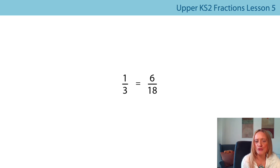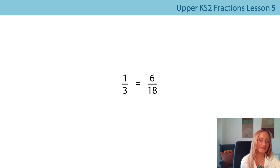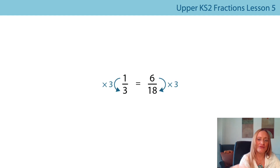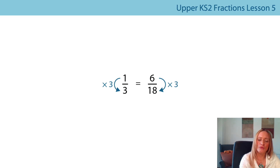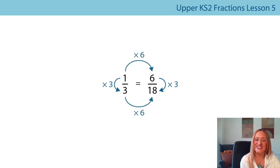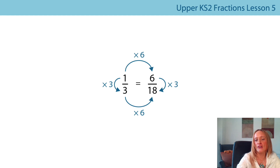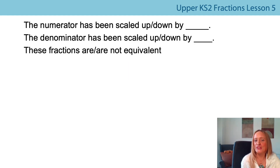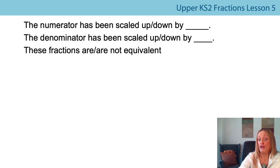Have a look at this one — you might want to pause and write it down. Is the scale factor the same vertically for both of these equivalent fractions? And is it the same horizontally? Can you see a relationship horizontally? Did you find that the scale factor was three? So the numerator had been scaled up by a factor of three — that's what we looked at yesterday, and we can see that helps us understand they're equivalent fractions. What about the horizontal relationship? Did you see that they're both multiplied by six? So they're scaled up by a factor of six. The numerator has been scaled up or down by a specific factor, the denominator has been scaled up or down by a specific factor, and then we can say if the fractions are or are not equivalent.